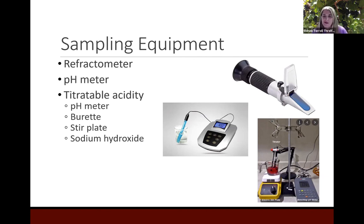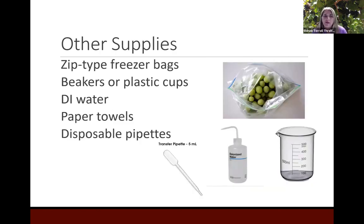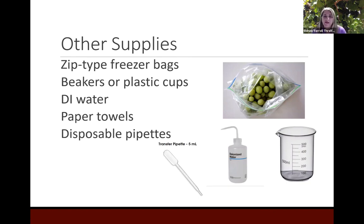Other supplies that come in handy for sampling: any kind of zip-top freezer bag — I prefer the ones with the actual zipper because I'm always spilling juice on myself otherwise. You can use beakers or plastic cups like a Solo cup or Dixie cup, though be careful when measuring pH because the pH meter doesn't stand up very well in a paper cup. You need DI water, which you can buy by the gallon at a grocery store. When I go to the vineyard, I typically have a little DI flask setup and some paper towels. Disposable pipettes work very well also — they're little pipettes you can throw away when done. Those are super handy things to have in the lab and to take out to the vineyard with you when sampling.